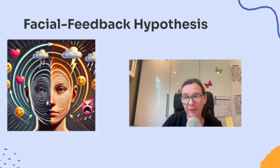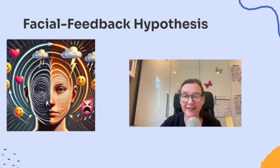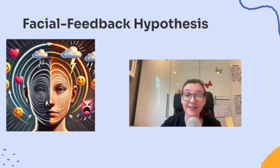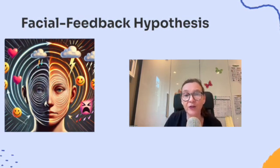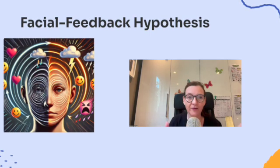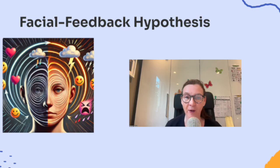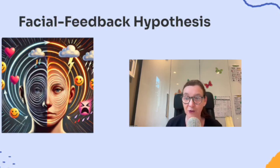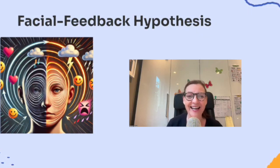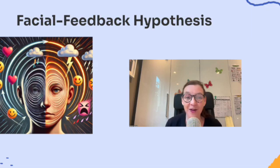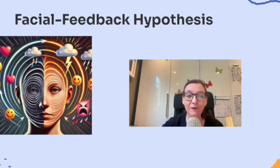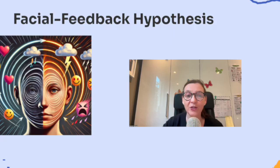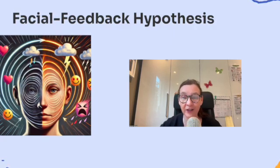Let's talk about the facial feedback hypothesis. This is the idea that your facial expressions don't just reflect your emotions, but they can actually influence how you feel. The facial feedback hypothesis suggests that your facial expressions can influence your emotional experience. So when you smile, your brain gets a signal that can make you feel happier, even if you weren't happy to begin with. Research shows that even forcing a smile — like holding a pencil between your teeth to mimic the muscles used for smiling — can actually boost your mood. This hypothesis supports the idea that physiological experiences like facial expressions can come before you consciously label or appraise your emotions.